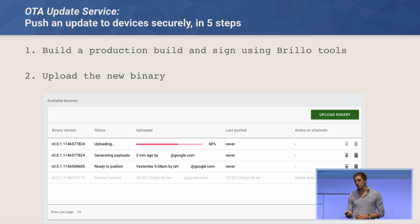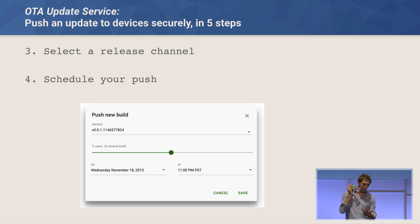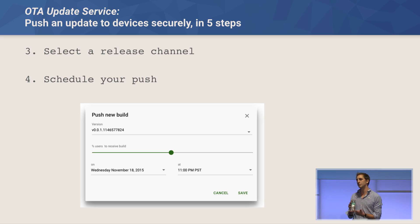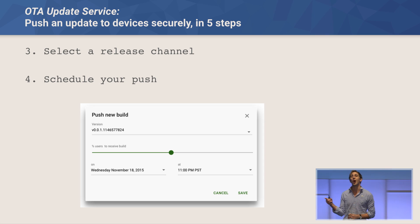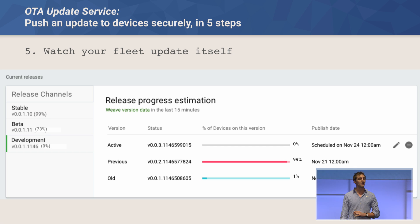Once you've uploaded your binary and the payloads are ready, you select a release channel. The release channel for Brillo and Weave works just like Chrome's release channels. We'll have three: a stable release channel where most users will be, a beta channel as a trusted-tester channel, and a developer release channel for your team. Each device knows what channel it's on and gets a separate build. Then you schedule your push — select your version, the percentage of users to receive the build (for stable, you probably don't want to push to everybody at once, so maybe 1%), and select your date. Once you press Save, step 5 is watching your fleet update itself.